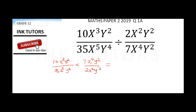10 times 7 gives me 70. Then x³ times x⁴: applying the indices law, you add the indices, giving x⁷. y² plus 2 gives y⁴ on the numerator. 35 times 2 gives 70 on the denominator; x⁵ times x² gives x⁷; and y⁴ times y² gives y⁶.